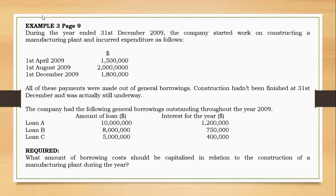We are told this is the way expenditures were incurred and drawn down from the bank. From 1st April 2009, $1.5 million was drawn — from 1st April to 31st December is nine months, so it is apportioned for nine months. From 1st August it is five months, and from 1st December 2009 it is one month.